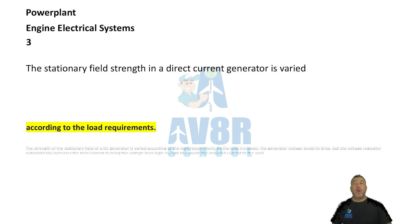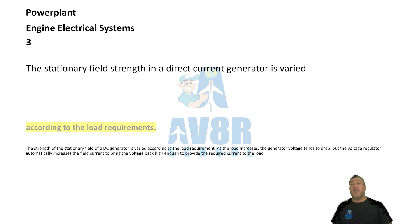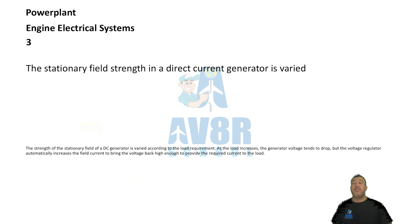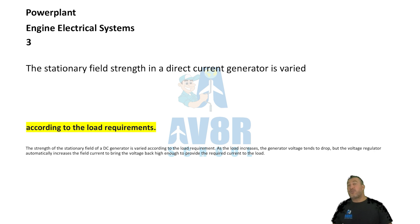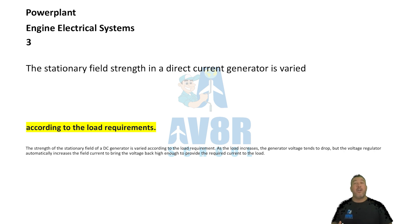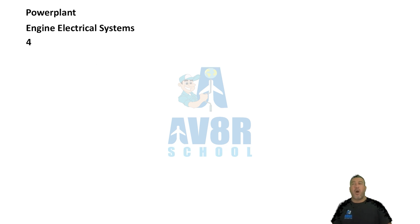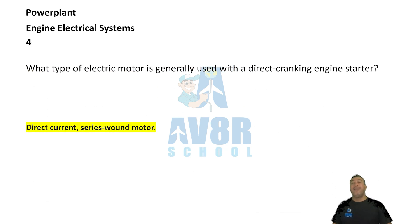Number 3. Satisfactory field strength in a direct current generator is varied according to load requirements.